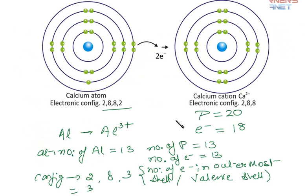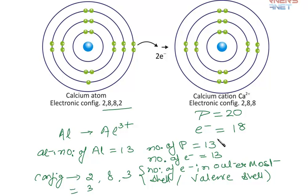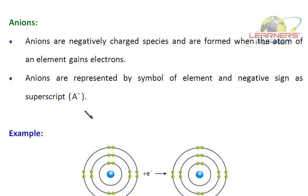Students, remember: metals form cations because they are electropositive — they have the tendency to lose electrons and attain a noble gas configuration. They are charged species and not stable on their own; they will combine with the respective anion to form a compound. Now let's discuss anions. Anions are negatively charged species and are formed when the atom of an element gains electrons.